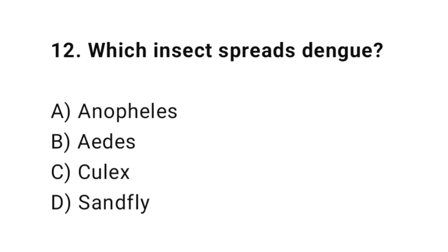Question number twelve: which insect spreads dengue? The right answer is B — Aedes mosquito. Aedes mosquito spreads dengue and also chikungunya.